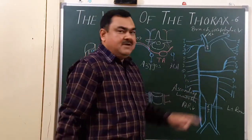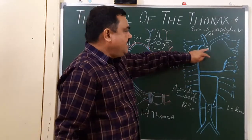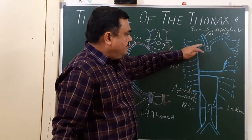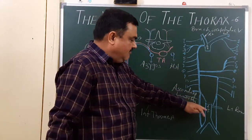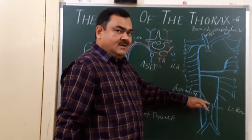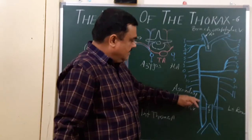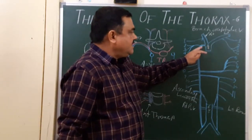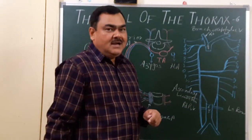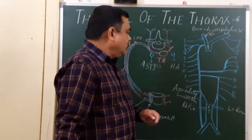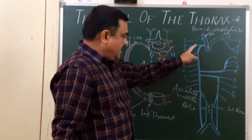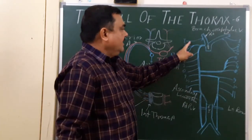This venous system is important in case of obstruction of the vein. If the superior vena cava is obstructed, then blood from the upper extremity and head and neck passes through the azygous vein into the inferior vena cava, and then through the inferior vena cava into the heart. In case of obstruction of the inferior vena cava, this channel provides an alternative pathway for collateral circulation. This is the venous system — the posterior intercostal veins drain into the azygous vein, hemiazygous vein, and then into the right atrium.